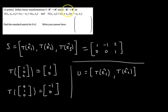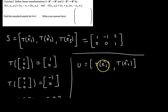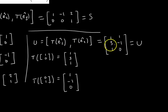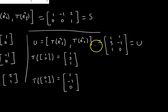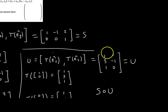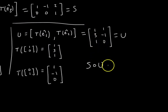Transformation U takes input vectors in R2, so we use the columns of the 2x2 identity matrix. Going through the same process, we find the standard matrix U for the transformation U. Now we want to find the standard matrix for S composed of U.